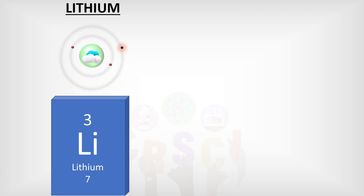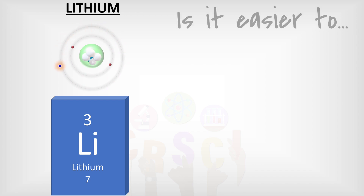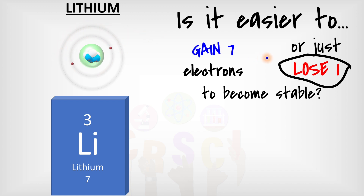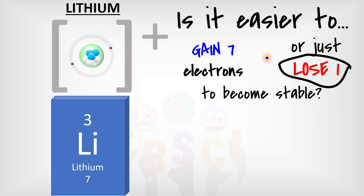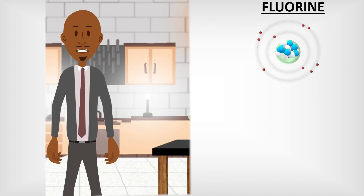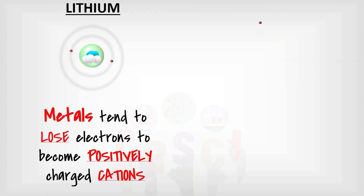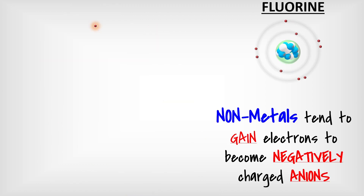Here's lithium, a metal. It has one electron on its valence shell, but it would prefer eight. Would it be easier for lithium to gain seven electrons or to lose one? Just shed one, right. And since it lost that negative electron, it becomes positively charged — a positive one charge, to be exact. So where does that electron go? Here's fluorine — it has seven valence electrons but would prefer eight.